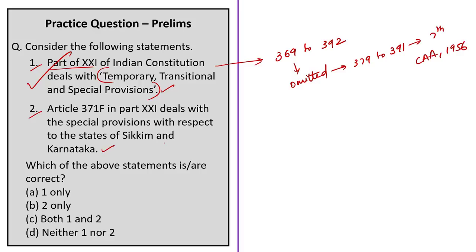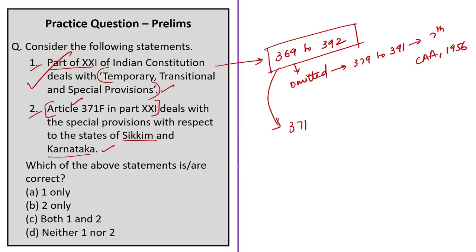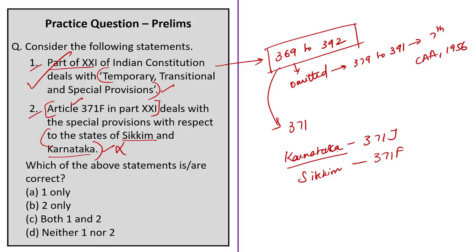Analyzing Statement 2: Article 371F is indeed in Part 21 (Articles 369–392), so the first half is correct. But the second half is incorrect — Article 371F deals only with special provisions for Sikkim, while Article 371J deals with Karnataka. Article 371J was enacted through the 98th Constitutional Amendment Act of 2012. Therefore, Statement 2 is wrong, and the correct answer is Option A — Statement 1 only.